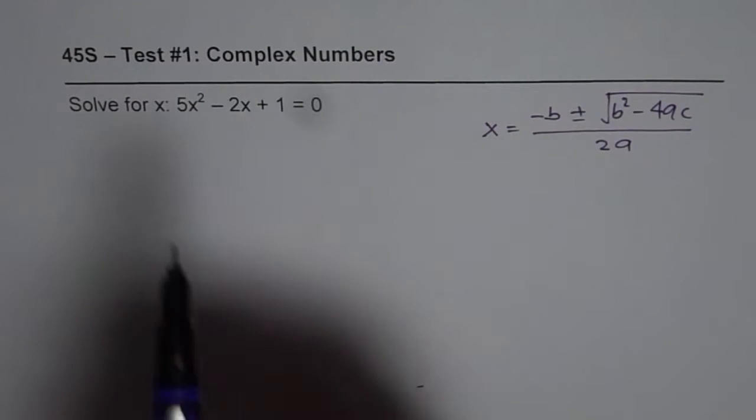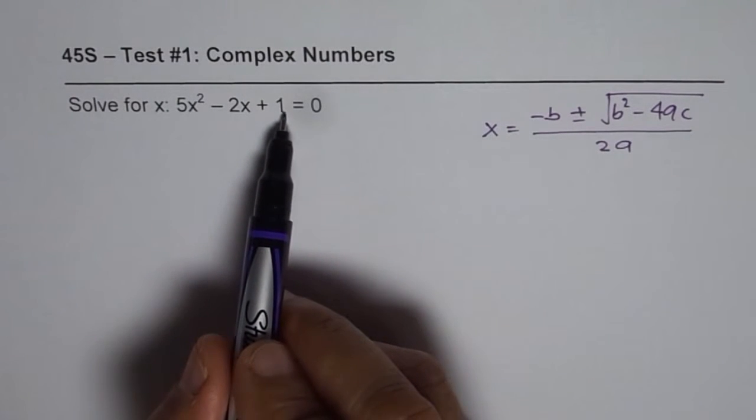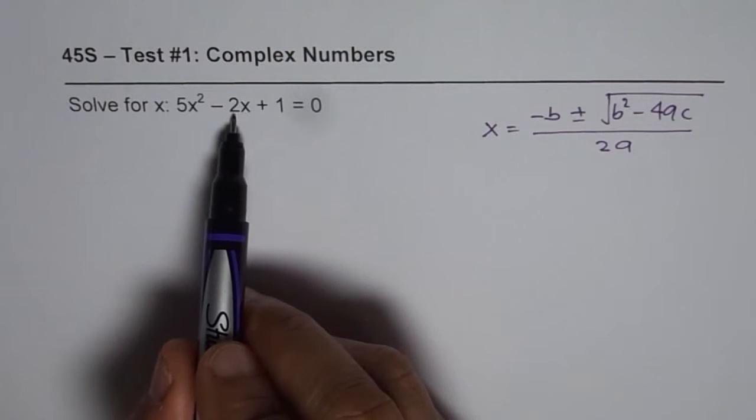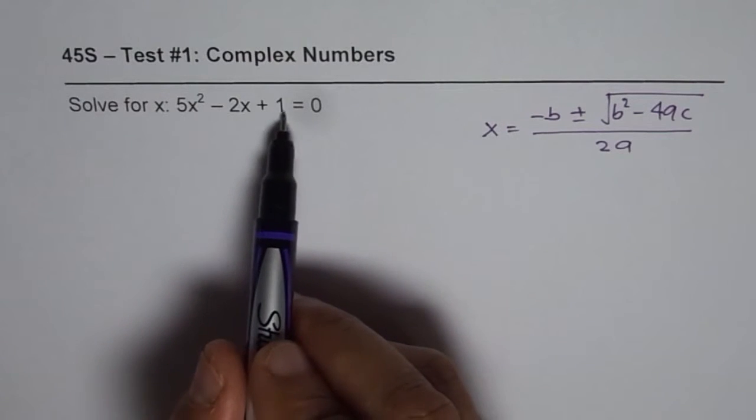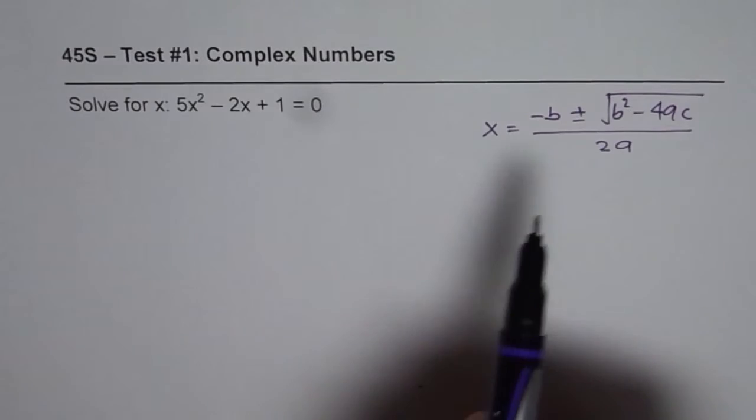Now factoring is not that simple in this case. 5 times 1 is 5 and we are looking for sum as minus 2. So 5 times 1 is 5, we do not really get direct answers. So we should apply the formula itself.